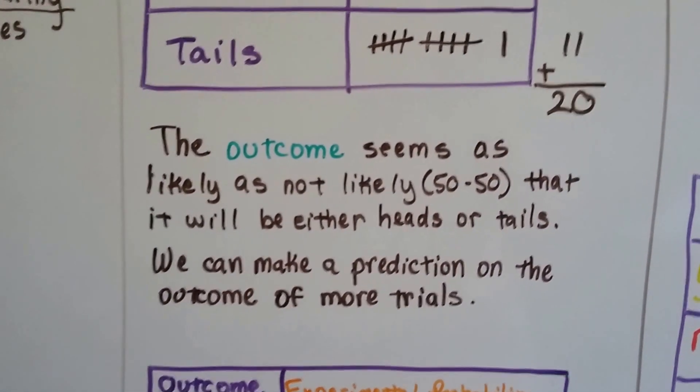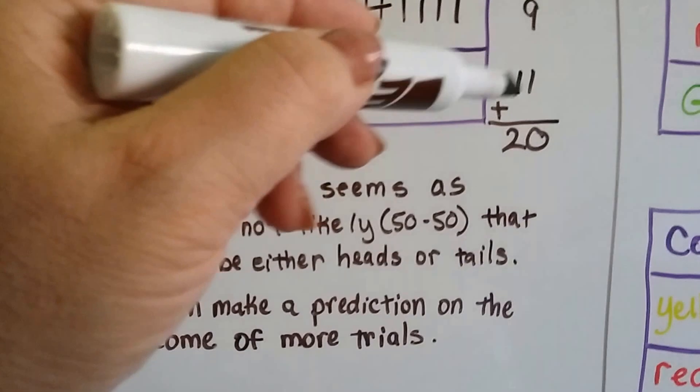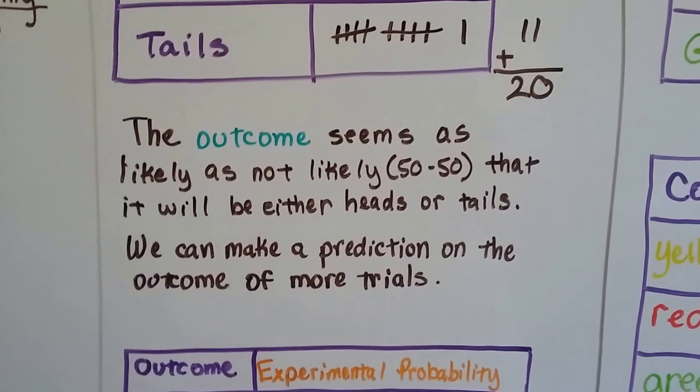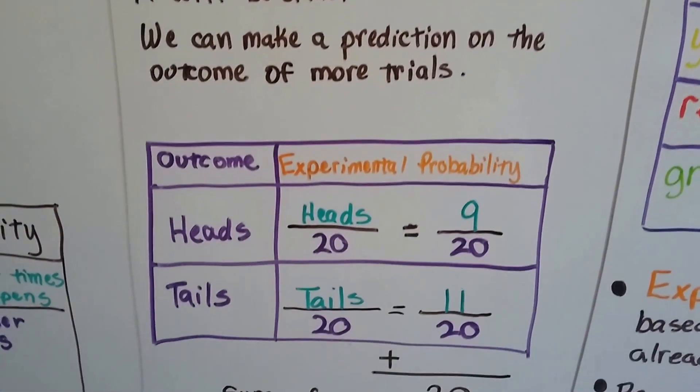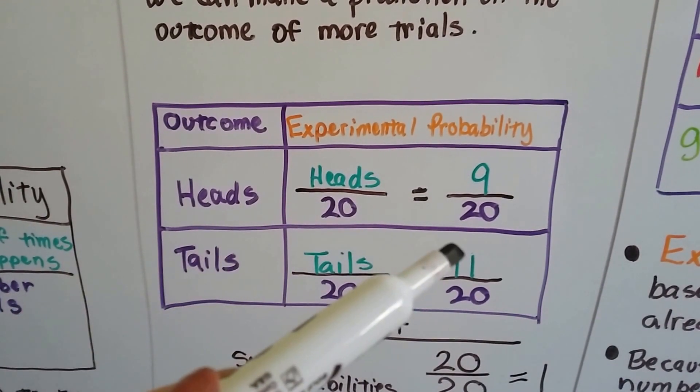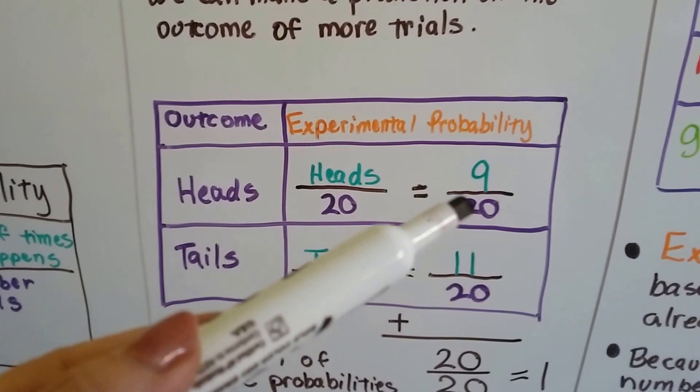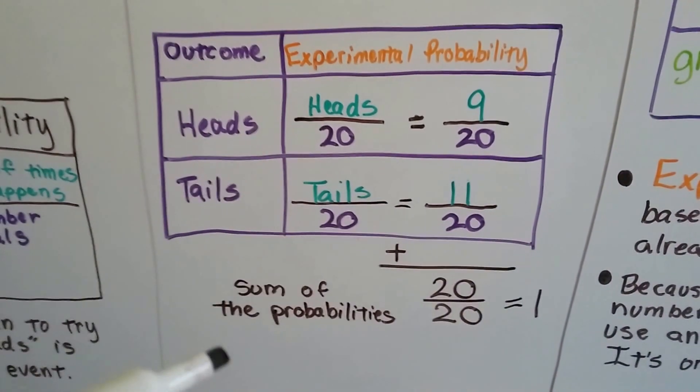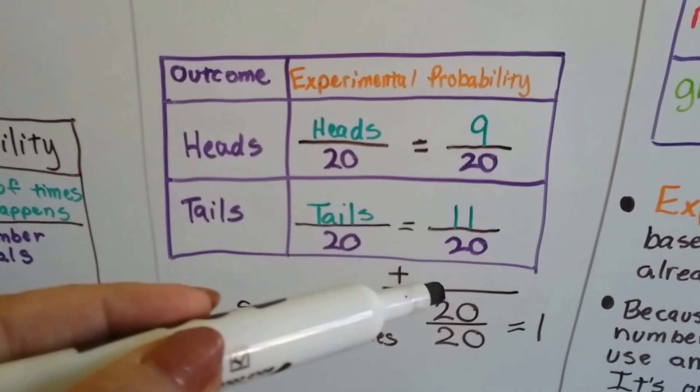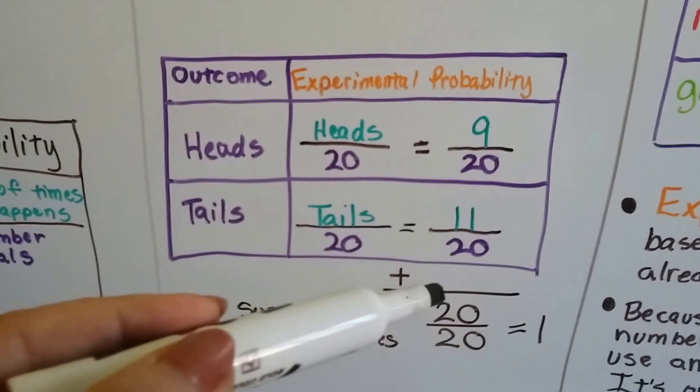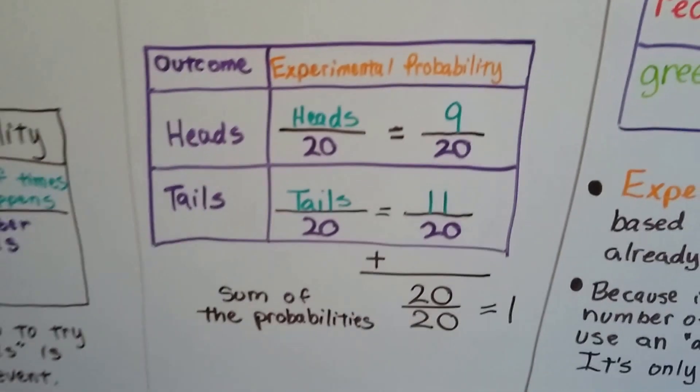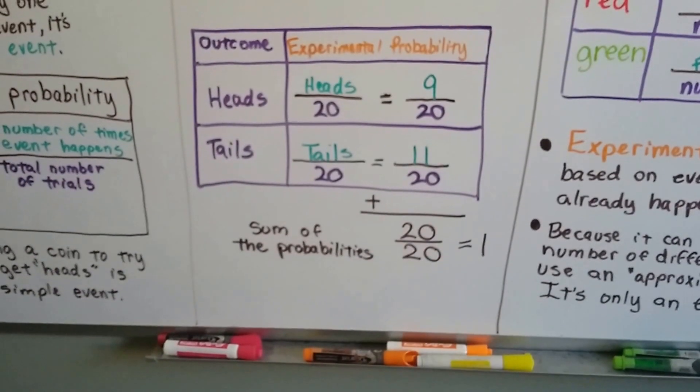The outcome seems as likely as not likely, right? It's about 50-50 that it'll either land on heads or tails. And we can make a prediction on the outcome of more trials. So since it landed on heads 9 times and tails 11 times, that's 9 out of 20 times and that's 11 out of 20 times. So the sum of the probabilities is 9 and 11 is 20. It's 20 over 20. And remember, when the numerator and denominator are the same, it equals 1. So the sum of the probabilities is 1.